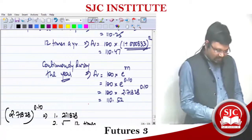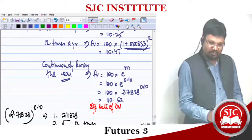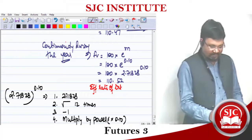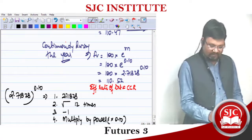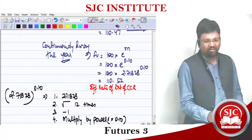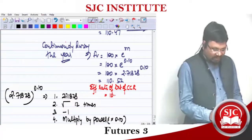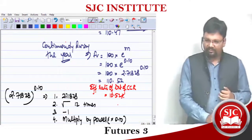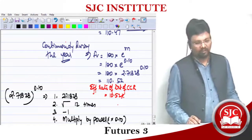Now from this, if you want to find the effective rate of interest on continuous compounding — this is called the Continuous Compounding Rate, or CCR. The effective rate of interest under CCR: since ₹100 became ₹110.52, the effective rate is 10.52%. This is effective, not nominal. The nominal rate was 10%.